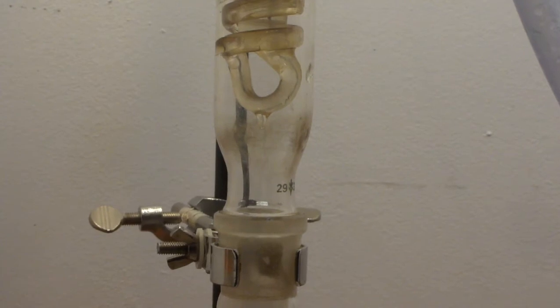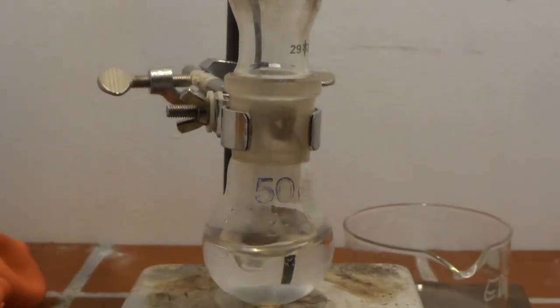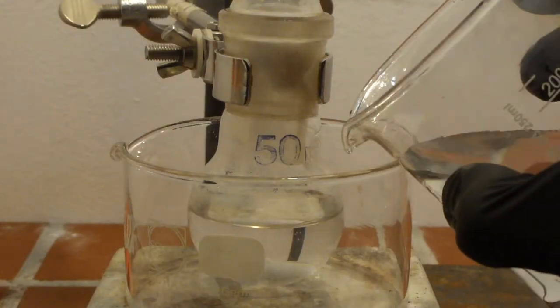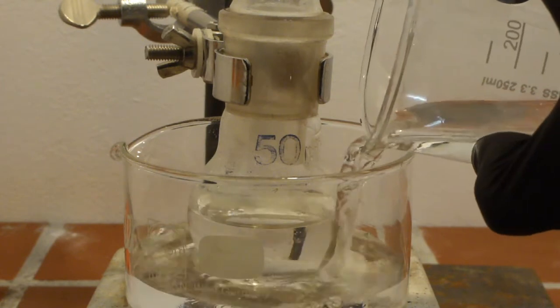We then set up a reflux condenser to reflux any escaping toluene vapor. We could of course also distill it out as an azeotrope with water. The mixture is then heated using a water bath.